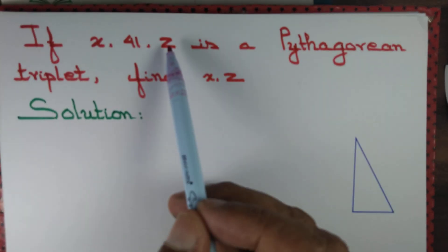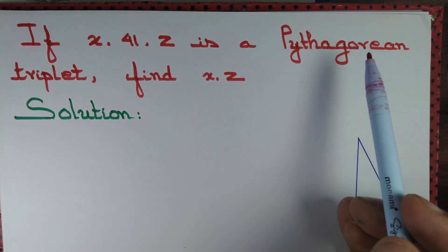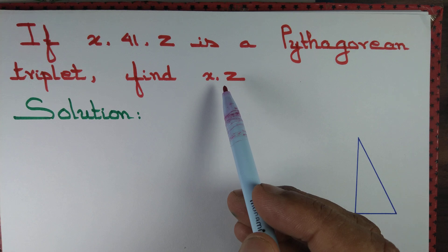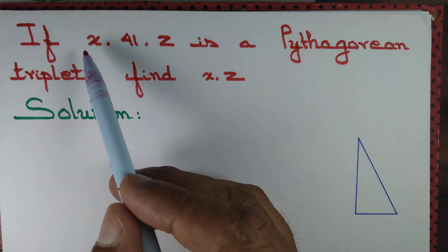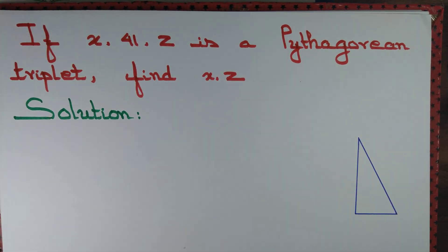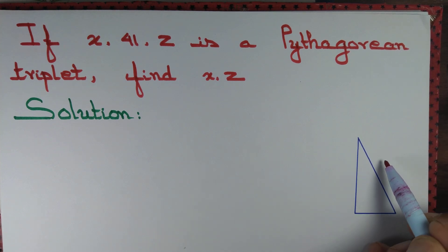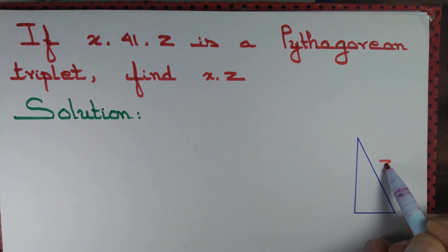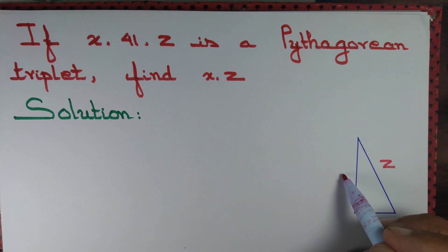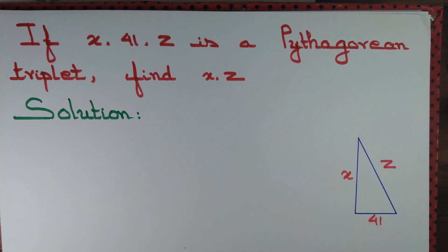If x, 41, z form a Pythagorean triplet, we need to find the value of x and z. Since x, 41, z form a Pythagorean triplet, there exists a right angle triangle such that the hypotenuse of the right angle triangle measures z units and the other two sides measure x units and 41 units.